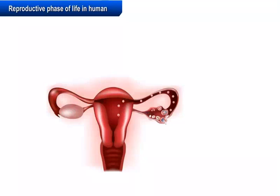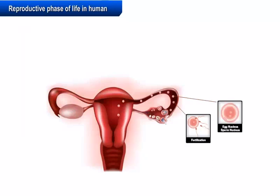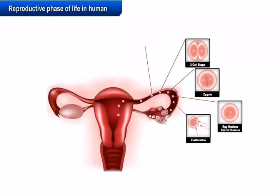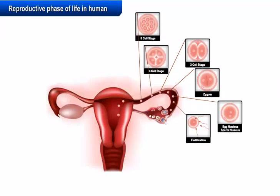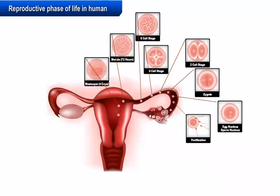The menstrual cycle includes the maturation of the egg in the ovaries, its release into the fallopian tubes, thickening of the uterine wall, and its breakdown if pregnancy does not occur. In case fertilization occurs, the fertilized egg — called a zygote — begins to divide and then gets embedded in the uterus for further development. The menstrual cycle is controlled by hormones.